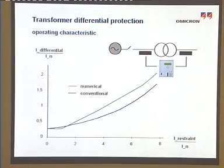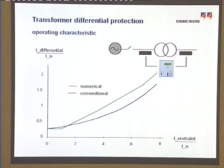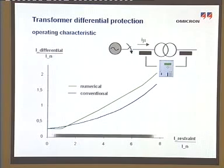It also explains what has to be considered in order to set the differential protection system properly. The trip characteristic of a transformer differential protection, which is defined in the differential restraint area, is mainly determined by differential currents resulting from specific circumstances under normal operation. Particularly, the magnetizing current and the tap changer are the significant influences within the load area.